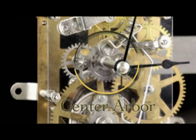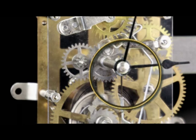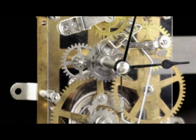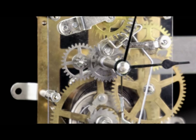In our movement, the center arbor is not a direct part of the going train. It is passively driven by the second wheel. Because the second wheel is part of the going train, the rotation of the center arbor will still be controlled by the escape wheel and pendulum.